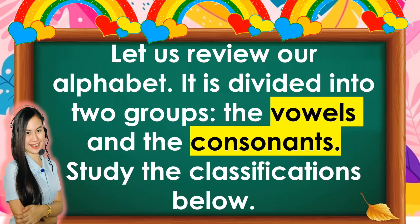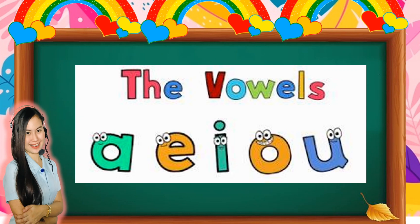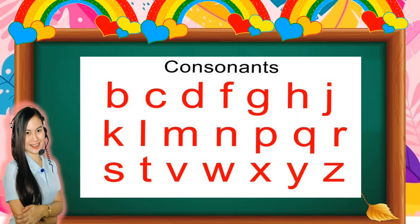Let us review our alphabet. It is divided into two groups: the vowels and the consonants. Study the classifications below. Here are the vowels: A, E, I, O, and U.